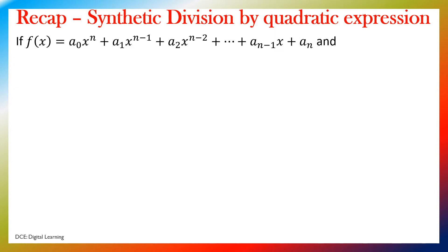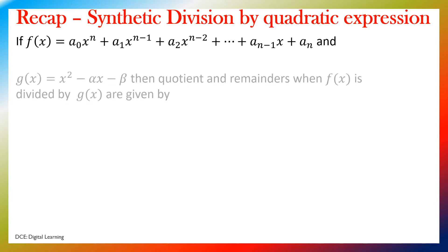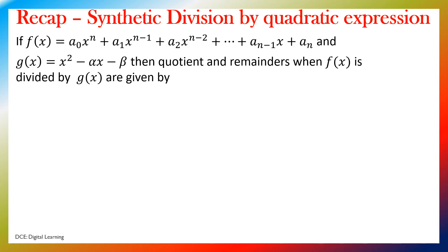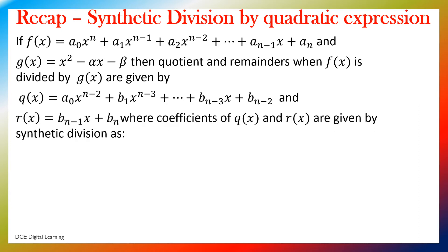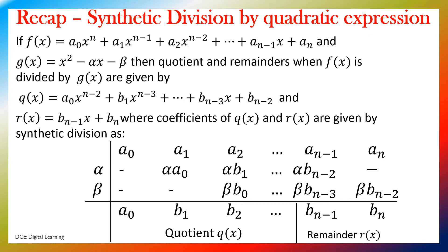For synthetic division by a quadratic expression: if f(x) equals a₀xⁿ + a₁xⁿ⁻¹ + ... + aₙ₋₁x + aₙ, and g(x) equals x² minus αx minus β, then the quotient and remainder when f(x) is divided by g(x) are given by q(x) equals a₀xⁿ⁻² + b₁xⁿ⁻³ + ... + bₙ₋₃x + bₙ₋₂, and r(x) equals bₙ₋₁x + bₙ. Coefficients are found by synthetic division using multipliers alpha and beta.